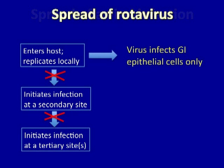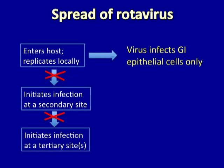As an example of a virus that replicates locally, I have chosen rotavirus. This is an enteric virus that infects the epithelial cells of the GI tract only, and doesn't really spread outside of the GI tract. So here we have a virus that is replicating at the site where it is inoculated, but does not spread in the host.